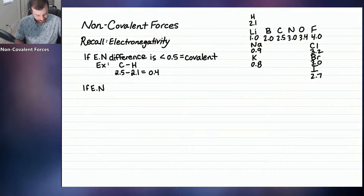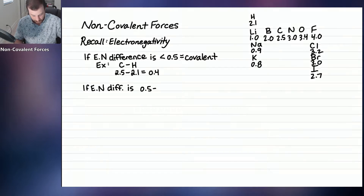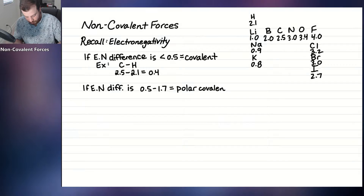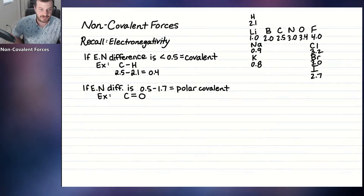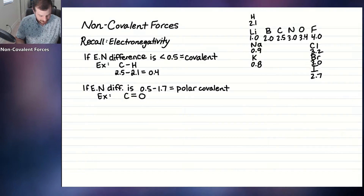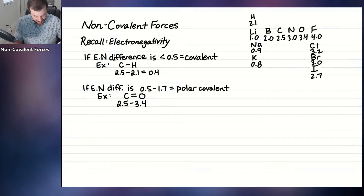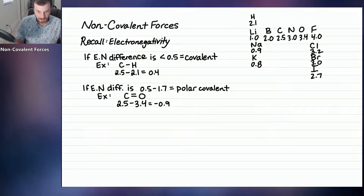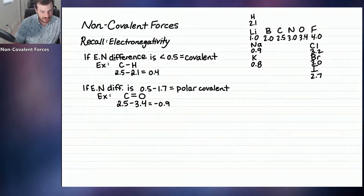If the electronegativity difference is between 0.5 and 1.7, we call that a polar covalent bond. For example, the bond between carbon and oxygen — it doesn't matter if it's a single, double, or triple bond. Carbon's value is 2.5, and oxygen's is 3.4. The difference is 0.9 in absolute value. Since 0.9 is between 0.5 and 1.7, carbon and oxygen form a polar covalent bond.